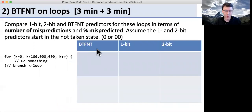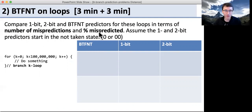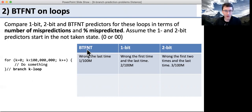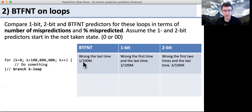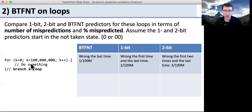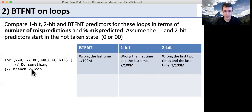Now we're going to compare three predictors on loops: backwards taken/forward not taken (BTFNT), a one-bit predictor, and a two-bit predictor, looking at mispredictions and percentages. For BTFNT, it's right every time we go backwards except the last time — wrong one out of 100 million times, essentially 0%. The one-bit predictor is wrong the first time through the loop and the last time — two incorrect predictions out of 100 million, also about 0%. For the two-bit predictor, we start as strongly not taken, mispredict the first two times and then at the end — three out of 100 million times wrong, still 0% given 100 million iterations.